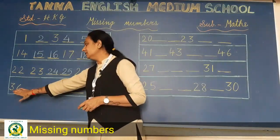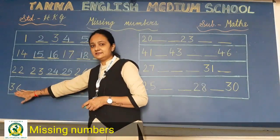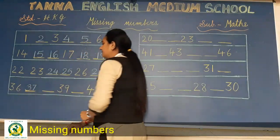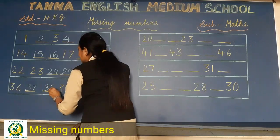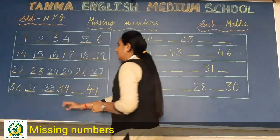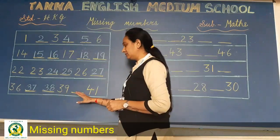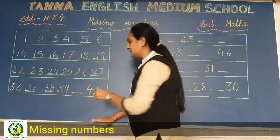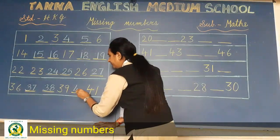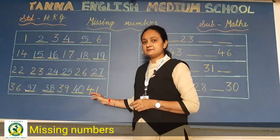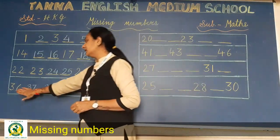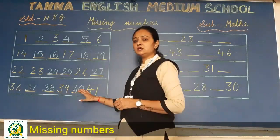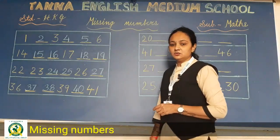Now 36 is written. So after 36, yes 37 and 38. Now 39 is written. So what will come here? 39 के बाद क्या आएगा? Yes, 40. See 41 is written. So 36, 37, 38, 39, 40 and 41. Completed. Okay.